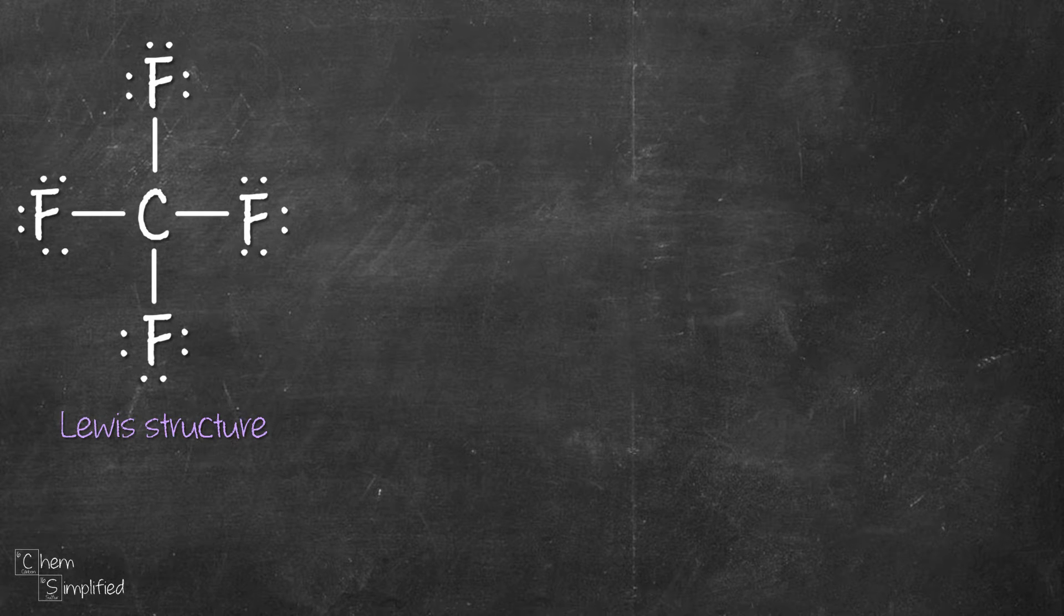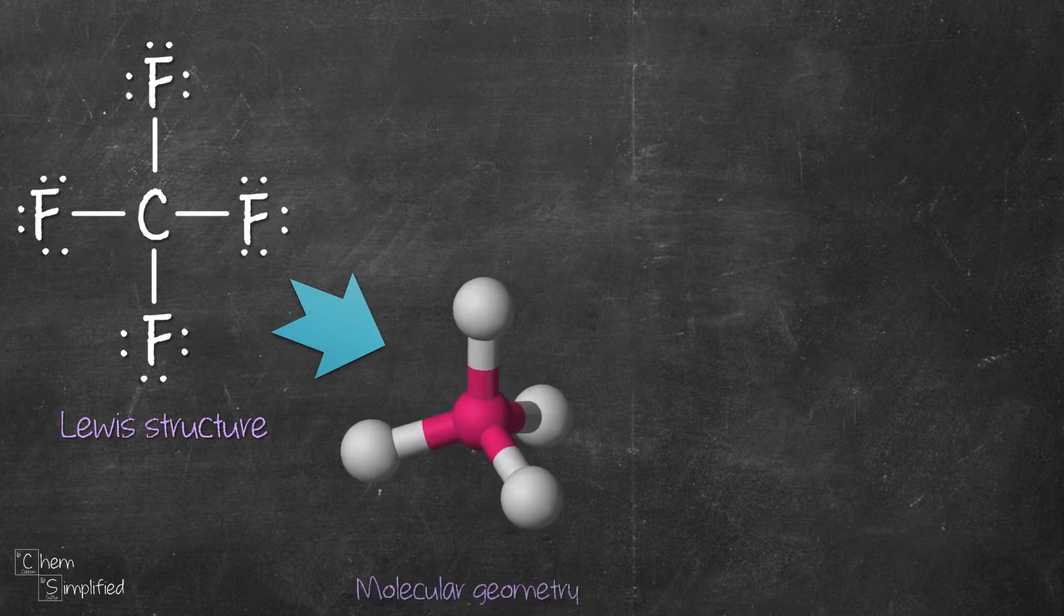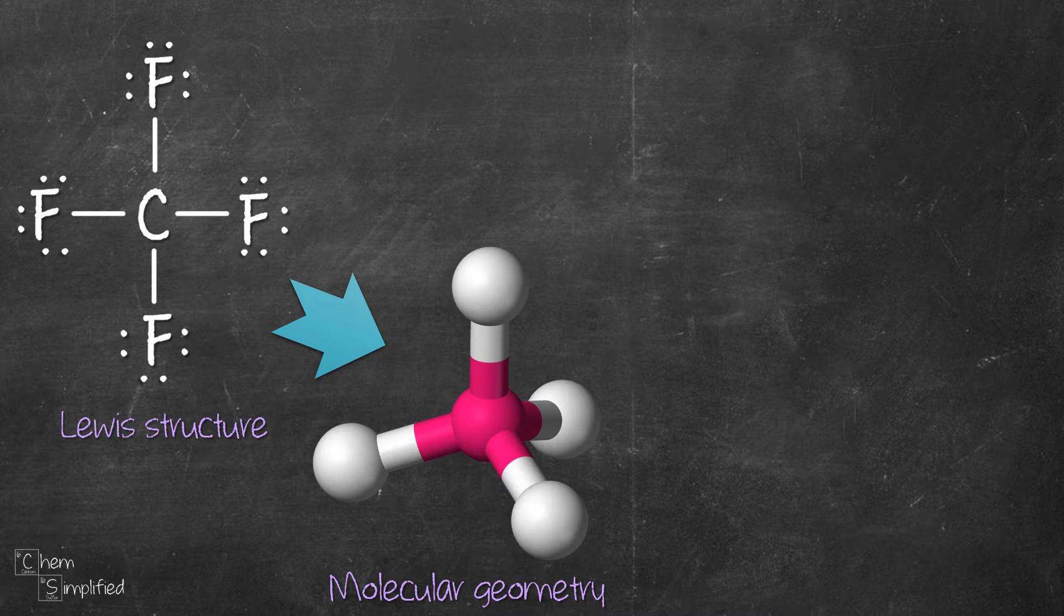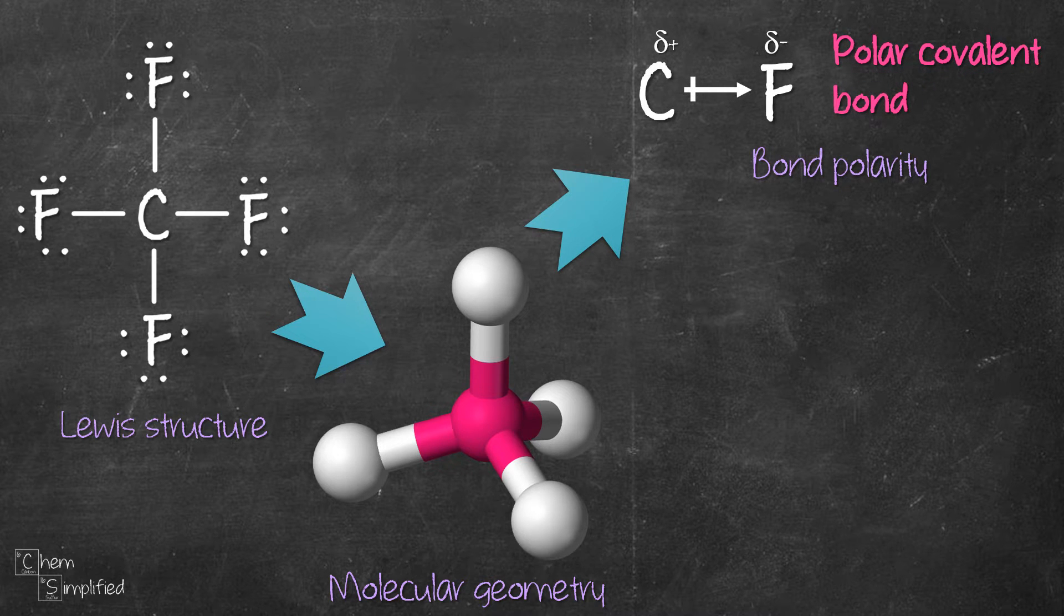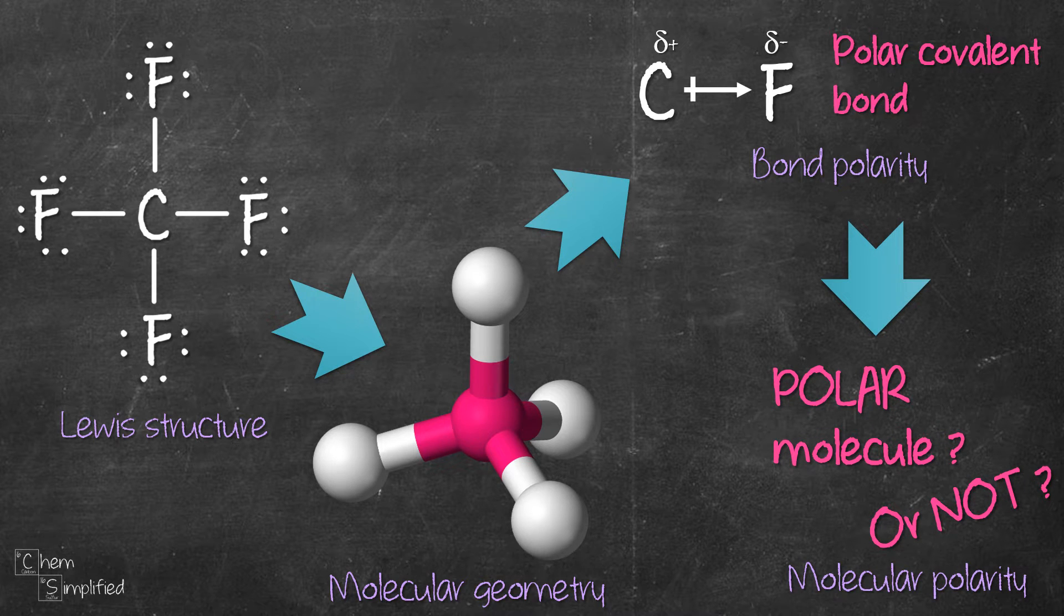Then, based on the Lewis structure, we figure out the geometry using VSEPR theory. Within the molecule, we'll need to then investigate all the bonds that exist. We determine the type of bonds, whether they are polar or non-polar covalent bonds, and then, putting together the bond polarities and the geometry, and a little bit of vector knowledge, we can then determine if the molecule is polar as a whole or not.